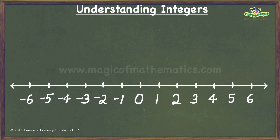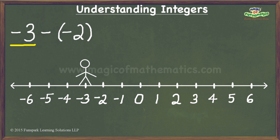The second example is negative 3 minus negative 2. Here, the first operand is again negative 3, so I stand at negative 3 again. However, the operator in this expression is the subtraction operator, and hence I turn to walk towards the left. Next, let us look at the second operand. This is negative 2, which means I need to walk two steps backwards, thereby ending up at negative 1, which is the result of evaluating the given expression.